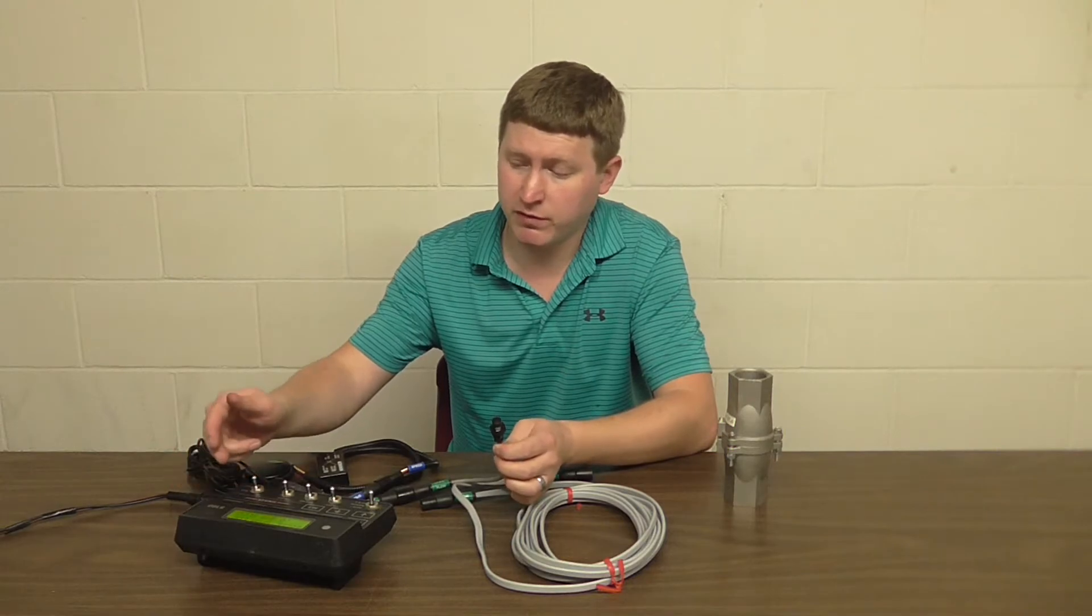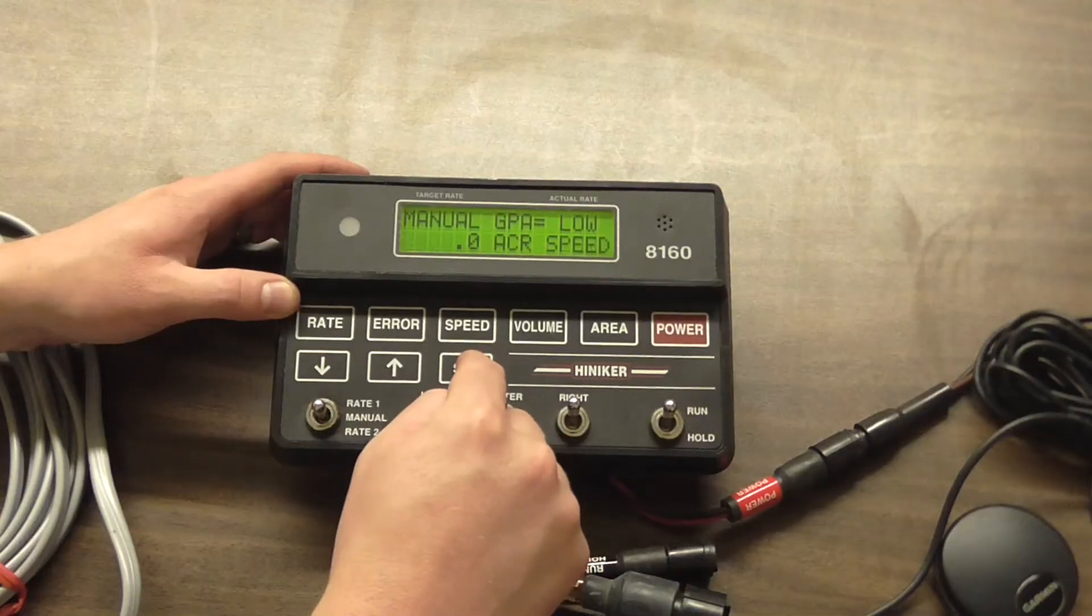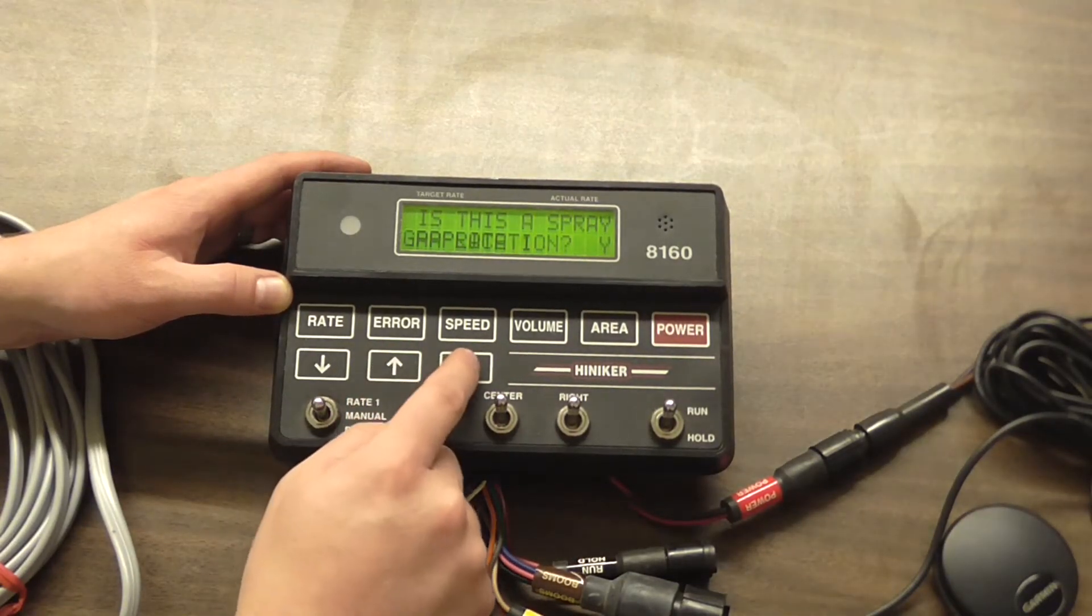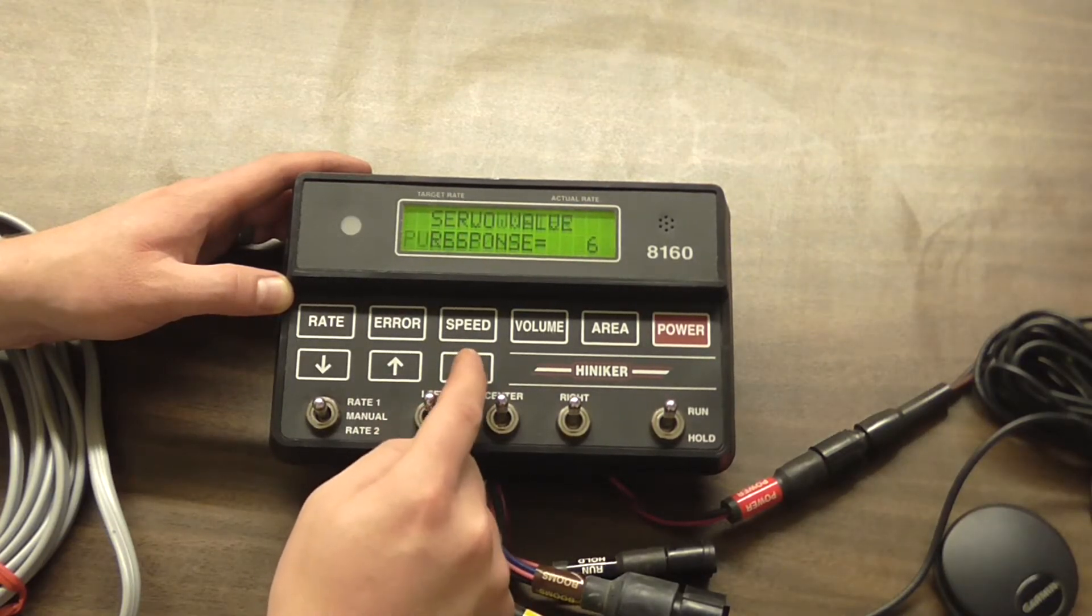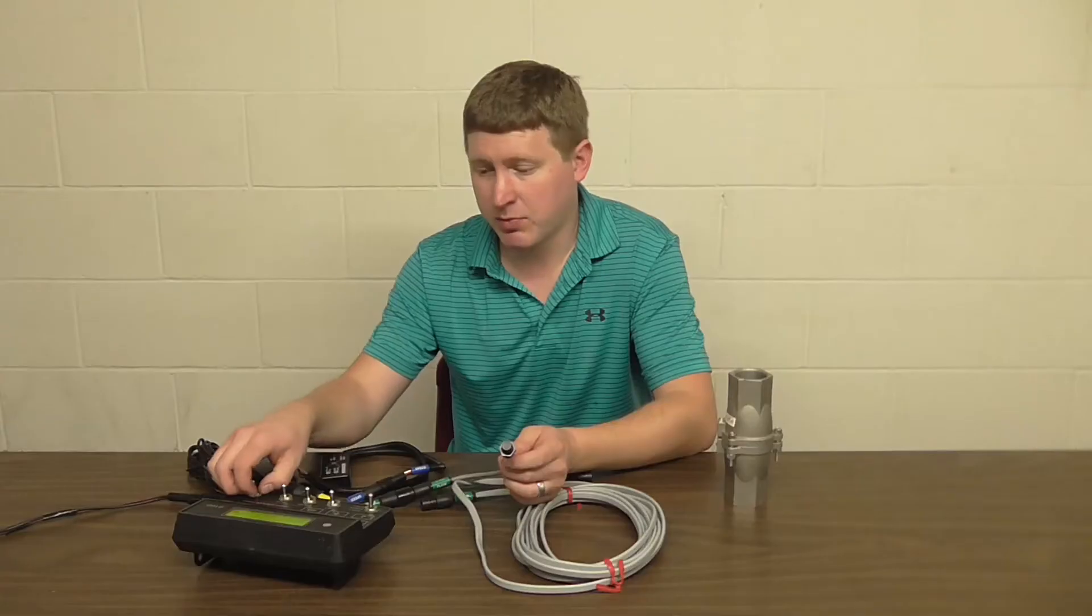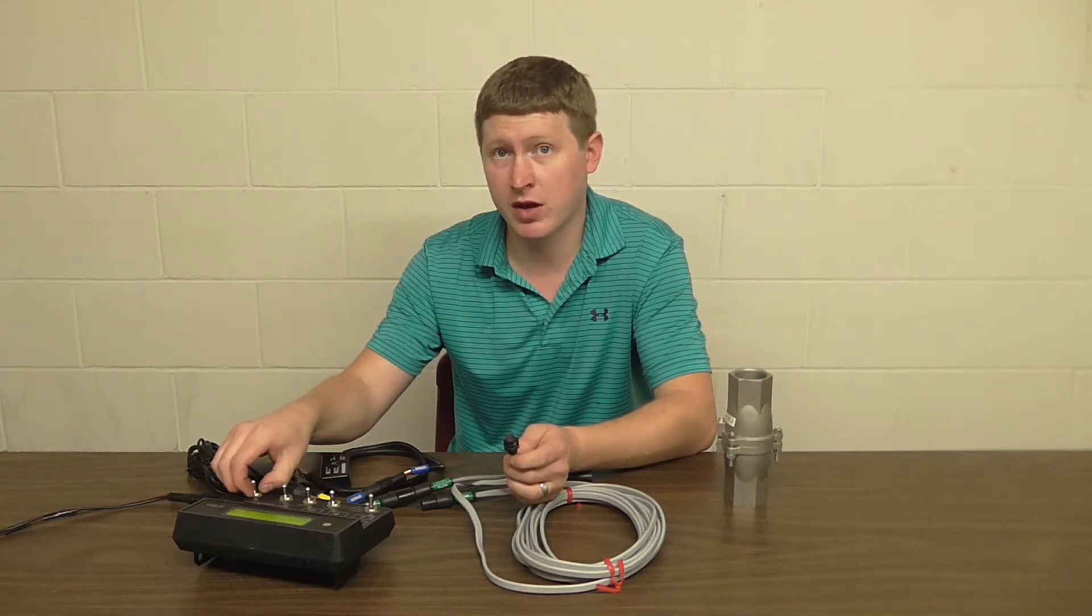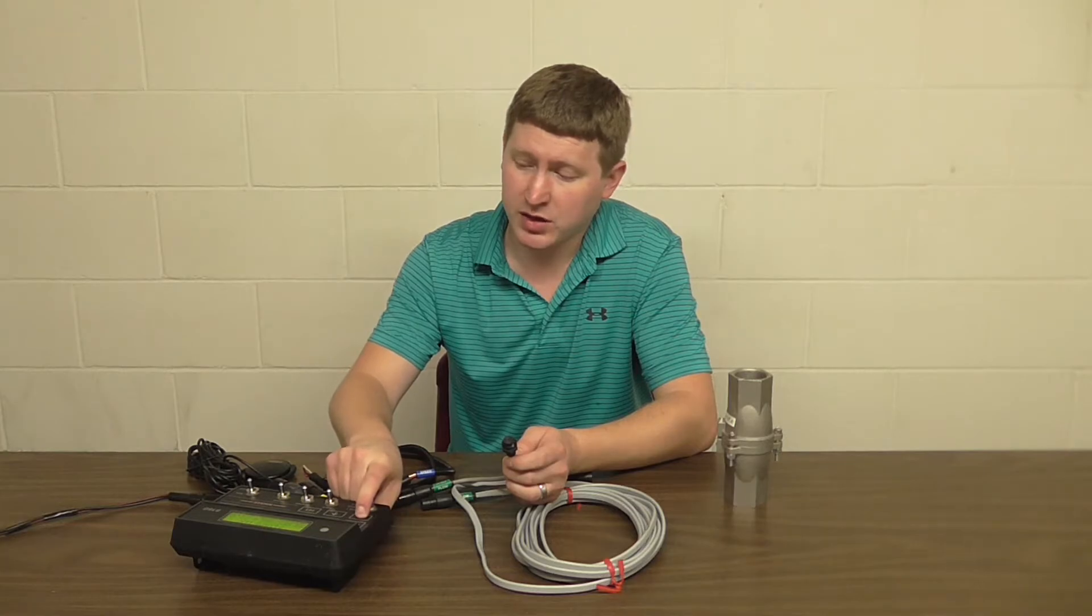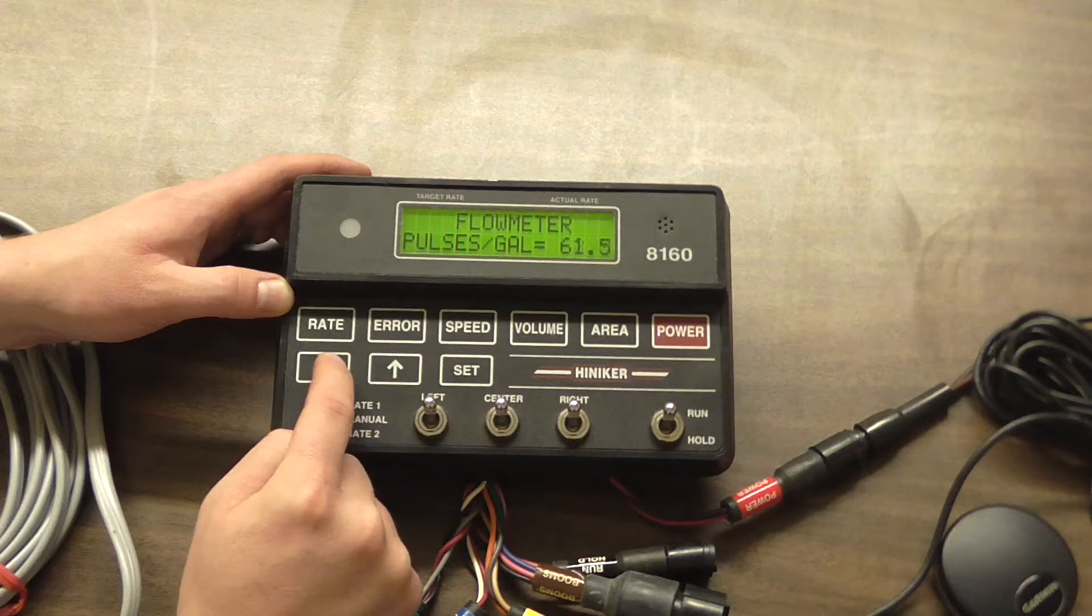For this test, what you're going to do is turn the 8160 on, press and hold the set key to get to the calibration menu, scroll through the calibration menu pressing the set key until you get to the flow meter reading. At this point, it's going to say pulses per gallon if you're in the spray application, or pulses per pound if you're in the anhydrous application. Either way, you want to bring that calibration number down to 1. Doing this will make it a lot easier to perform the test.